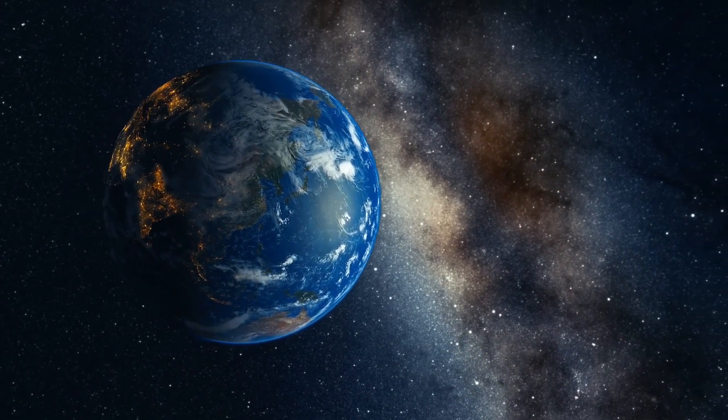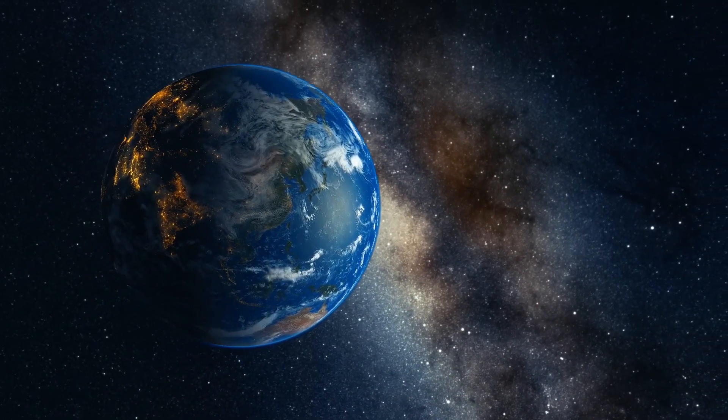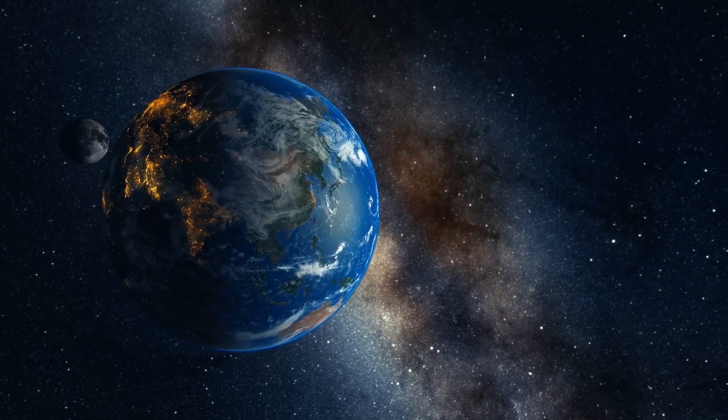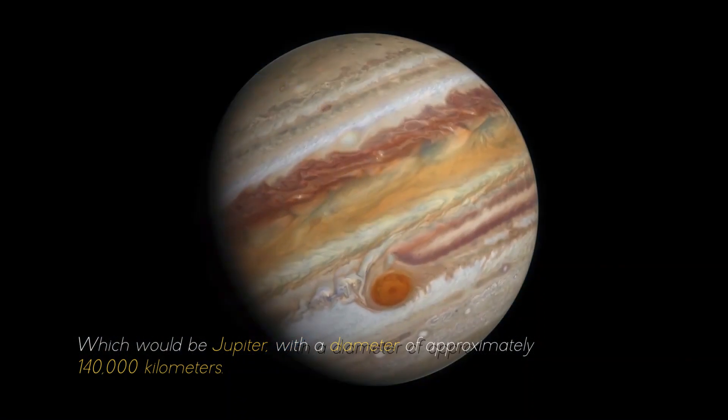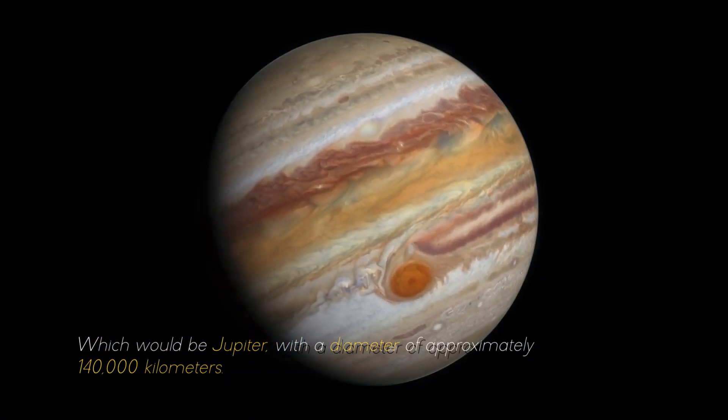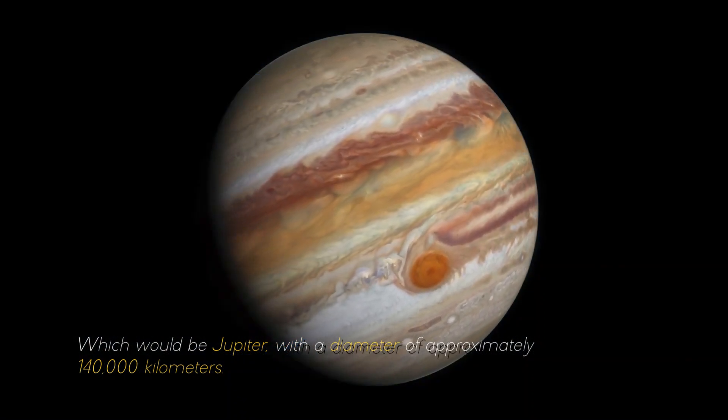If we compare it with the largest planet in our solar system, it would look like a ping-pong ball in front of a soccer ball, which would be Jupiter, with a diameter of approximately 400,000 kilometers.